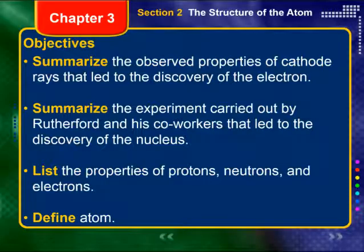Alright, chemistry. Let's do the second part of our video lecture for this combined section of sections 1 and 2. In today's video, I want you to be able to summarize the observed properties of cathode rays that led to the discovery of the electron, summarize the experiment carried out by Rutherford and his co-workers that led to the discovery of the nucleus, list the properties of protons, neutrons, and electrons, and define atom. So, here we go.